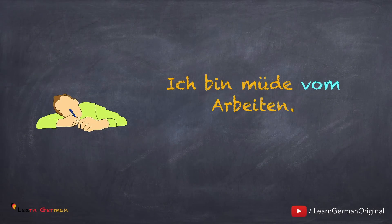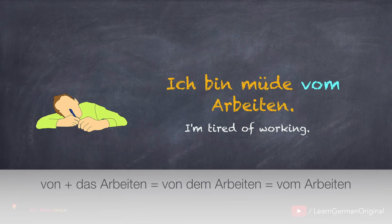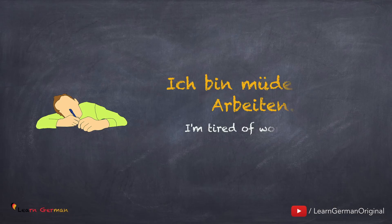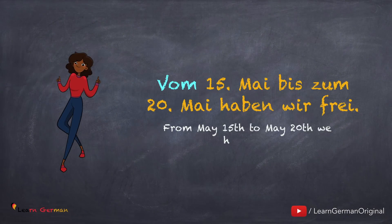Sometimes you can also form a noun out of a verb. For example: 'Ich bin müde vom Arbeiten.' The noun DAS Arbeiten comes from the verb Arbeiten. VOM is also used with dates. For example: vom 15. Mai bis zum 20. Mai haben wir frei.